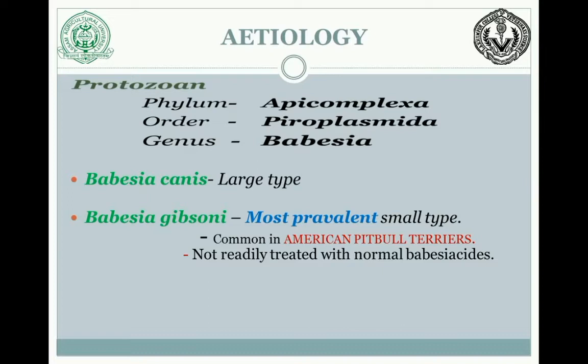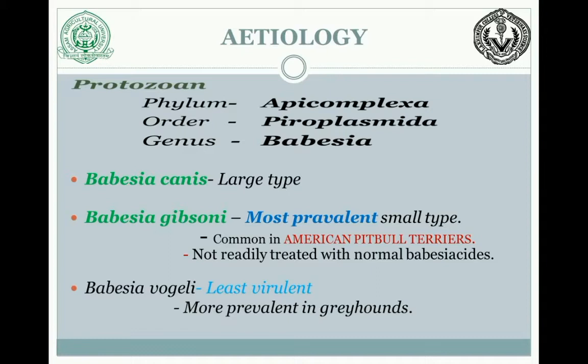Babesia vogeli is known as the least virulent type and is more prevalent in greyhounds. Babesia rosae is the fourth species and is known to be the most virulent species.